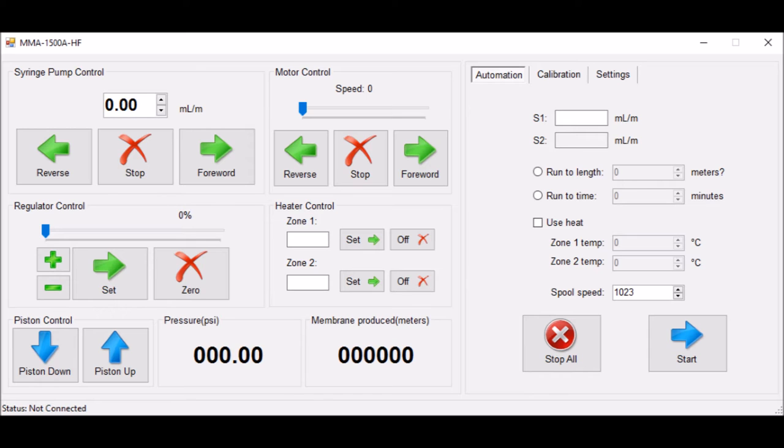On the right-hand side of the window, we can set up an automated operation, controlling aspects such as injection speed, run-to length, run-to time, zone temperature, and spool speed.